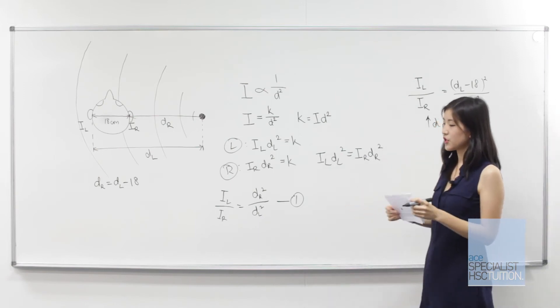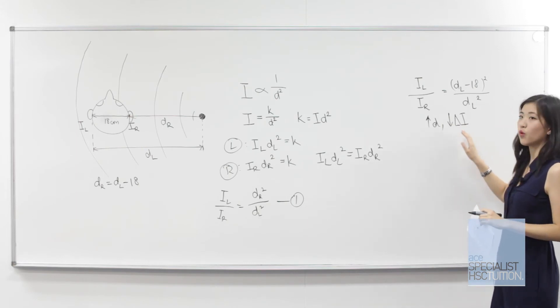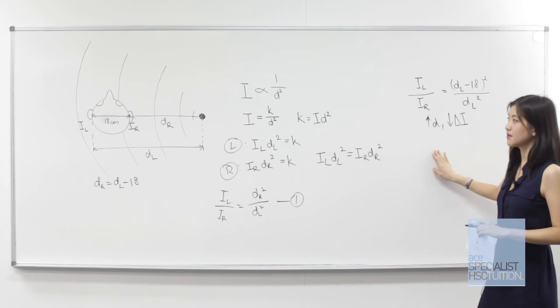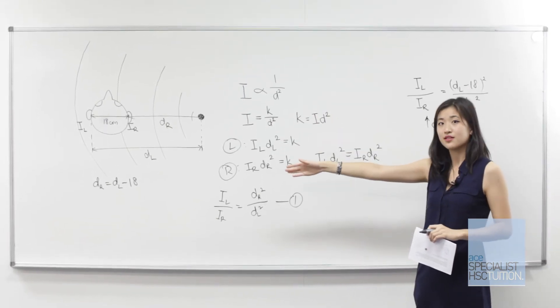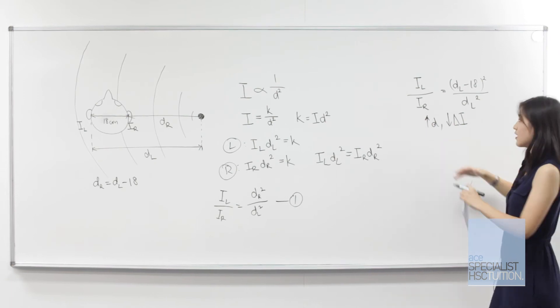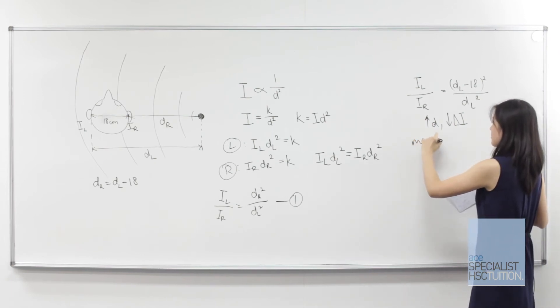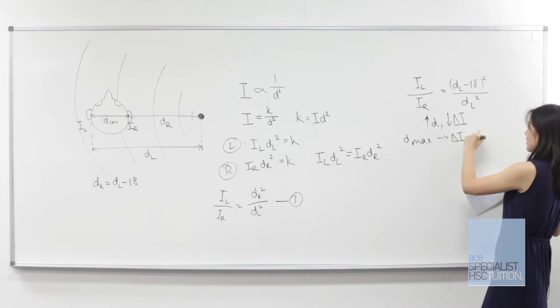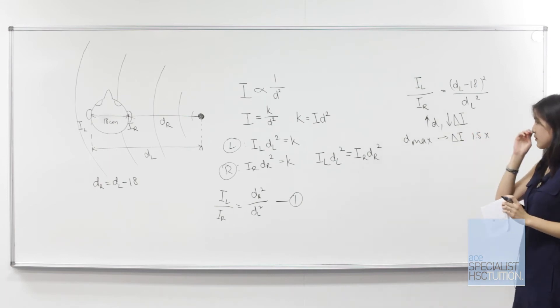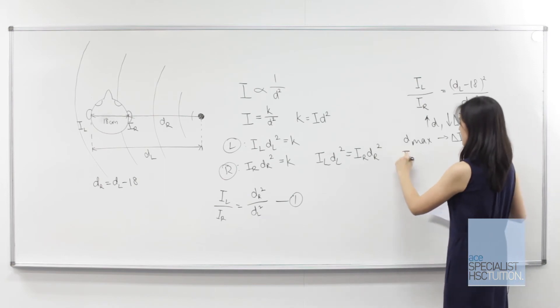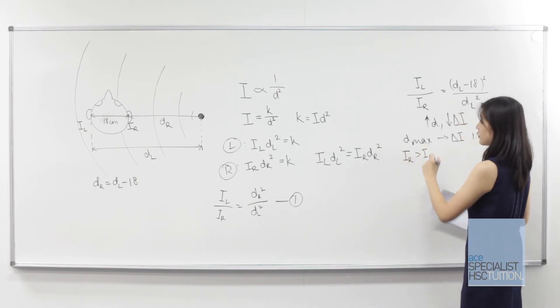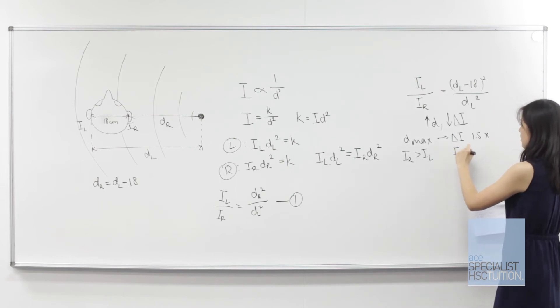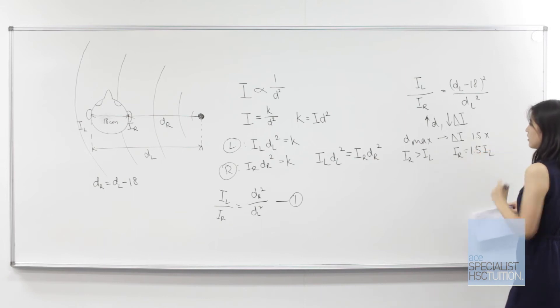From the question, we need a minimum difference in intensity of 1.5 times. The maximum distance that the sound can be placed and still have that 1.5 times occurs when the difference in intensity equals 1.5 times. Since the intensity at the right ear will be greater, we know that ir equals 1.5 times il. Now we can insert this relationship into the equation. Let's call this equation two.